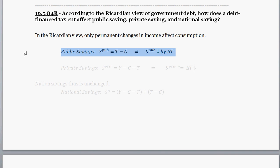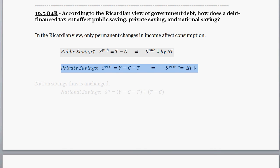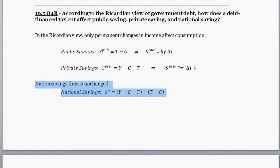First, what happens to public savings? Public savings decreases by whatever the amount of the change in taxes were — same as before. Private savings, in the Ricardian view, will increase by exactly the amount of the tax cut. The logic is that consumers will see the debt-financed tax cut and realize it will have to be paid for in the future through additional taxes. Thus, consumers will save the entire tax cut for the future, and today's consumption won't change at all.